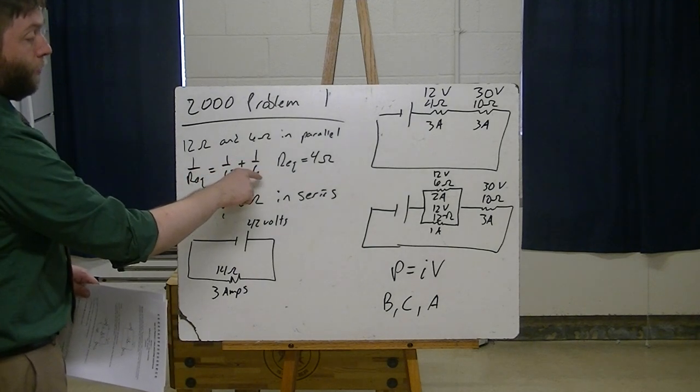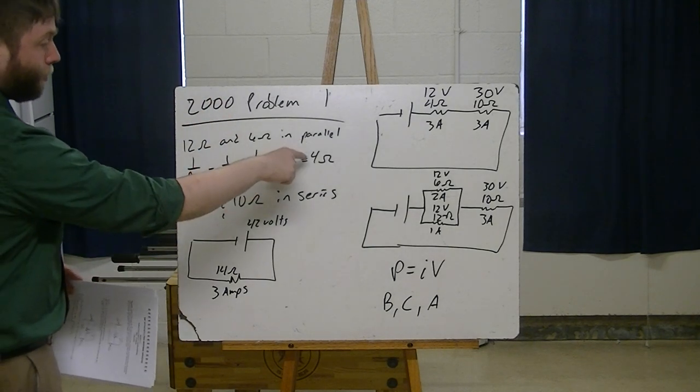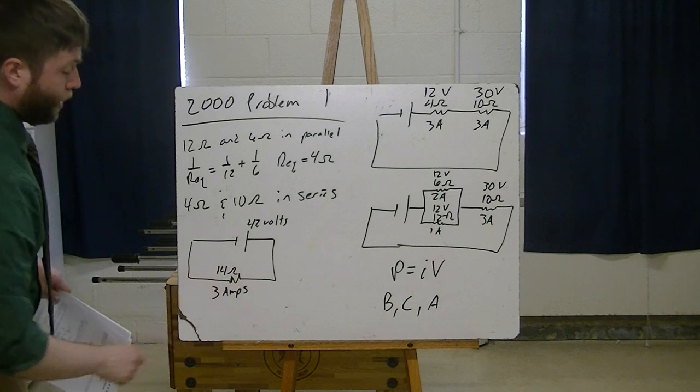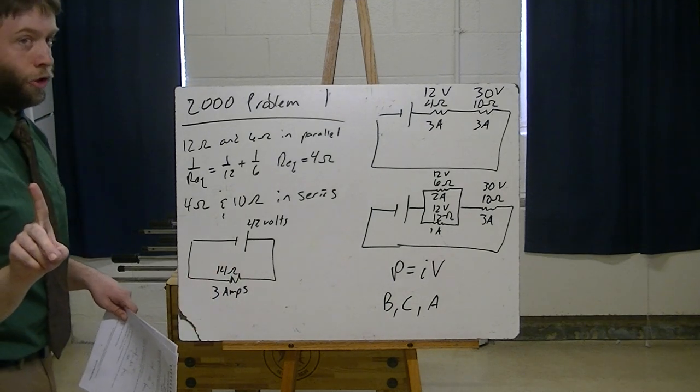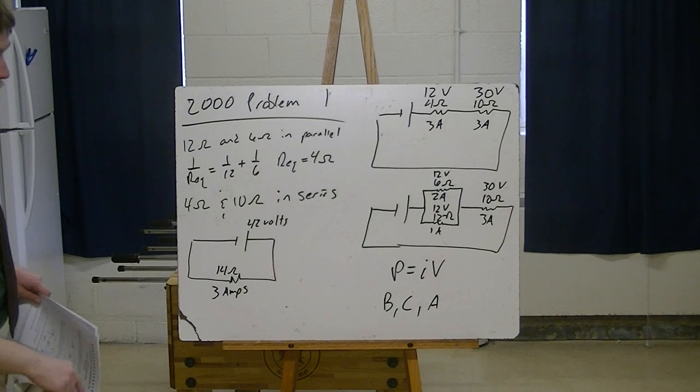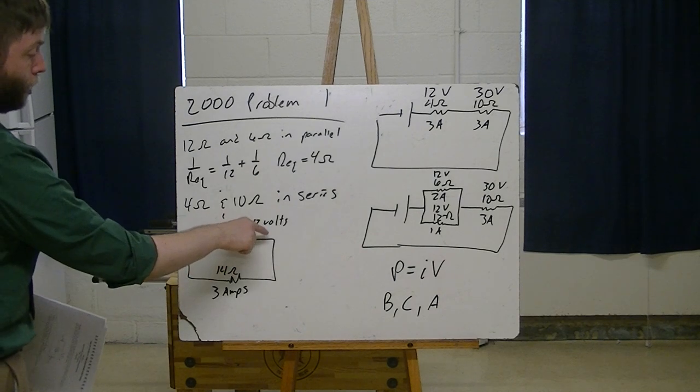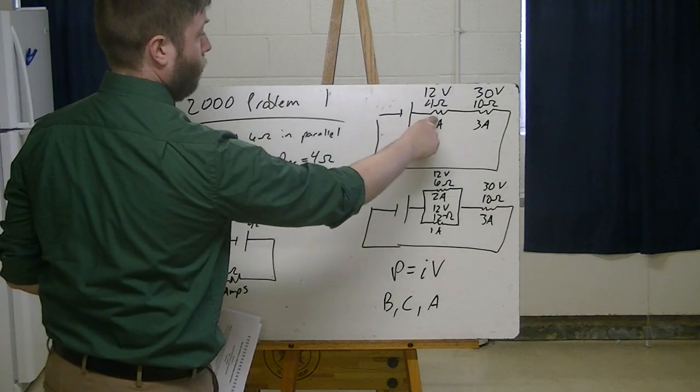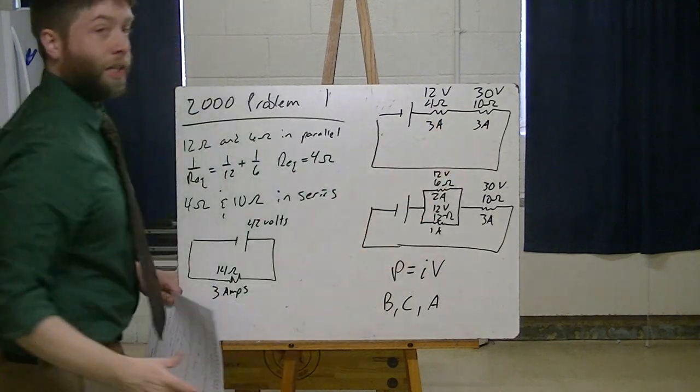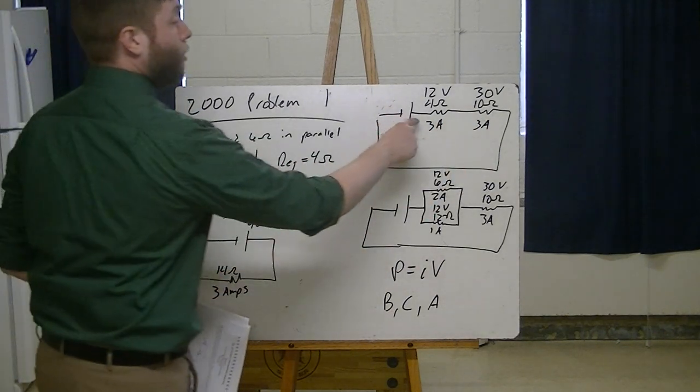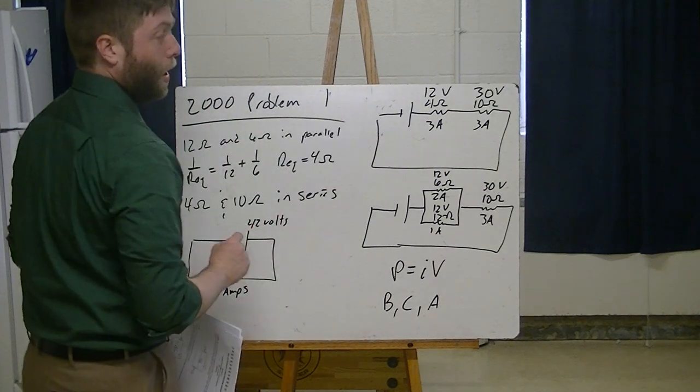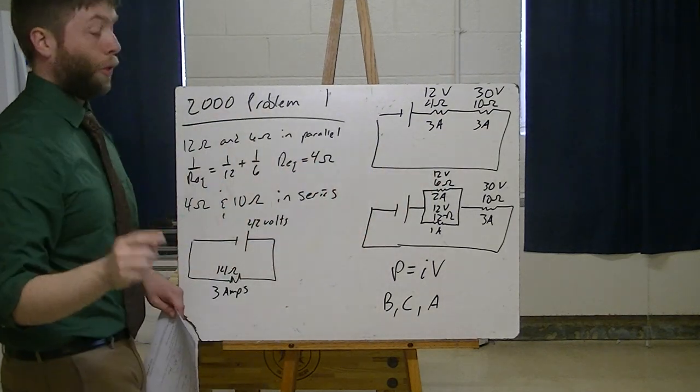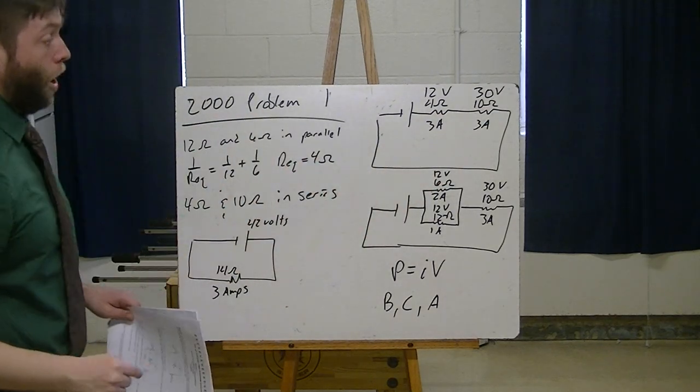So first thing is I put the 12-ohm and the 6-ohm in parallel, figured out that's a 4-ohm resistor. That 4-ohm and that 10-ohm are now in series, so that makes a 14-ohm resistor. That is going to have a current of 3 amps, voltage 42 up here. Then I split that back into the 4-ohm resistor and the 10-ohm resistor. Each one of these has to have the same current because they're on the same line, so each one of these is 3 amps. Then I use V equals IR to figure out the voltage. I've got 12 and 30. I know that's correct because 12 and 30 adds back up to the mother voltage of 42.